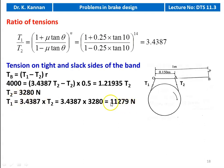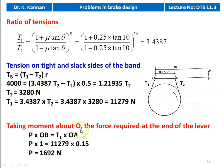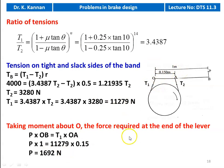T1 = 11,279 Newton and T2 = 3280 Newton. Taking moment about the fulcrum O: P × OB = T1 × OA. So P × 1 = 11,279 × 0.15. The force required at the end of the lever P = 1692 Newton. This is the answer to the problem.